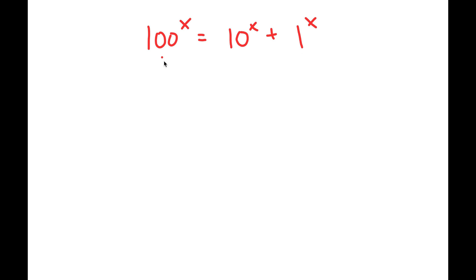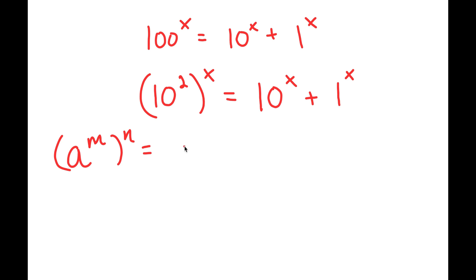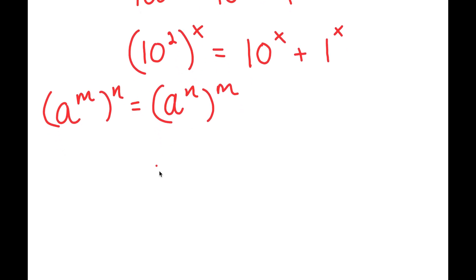To solve this, what I'm first going to do is rewrite 100 to the power of x as 10 squared to the power of x. So now this is equal to 10 to the power of x plus 1 to the power of x. Now, if I have something in the form a to the power of m to the power of n, this is equal to a to the power of n to the power of m. So 10 to the power of 2 to the power of x is equal to 10 to the power of x to the power of 2.